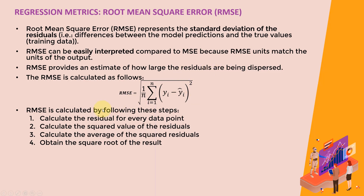The RMSE steps are: calculate the residual for every data point, calculate the square value of the residual, calculate the average of the squared residuals by summing and dividing by the overall number of samples, and then obtain the square root of that result. That gives you the RMSE, or root mean squared error.